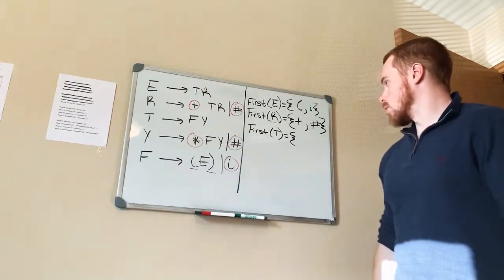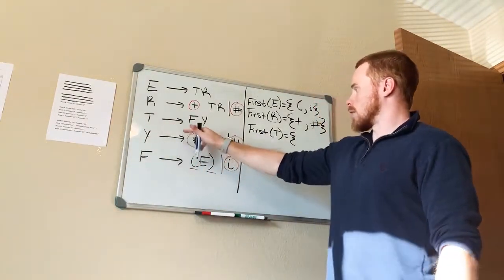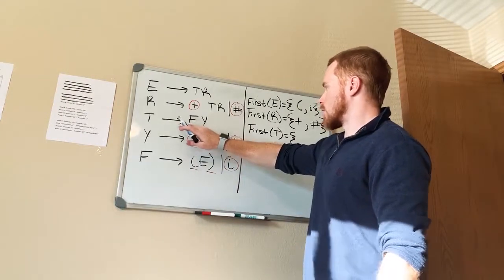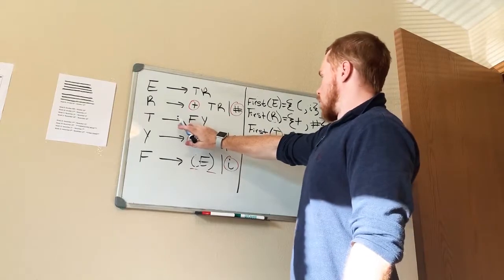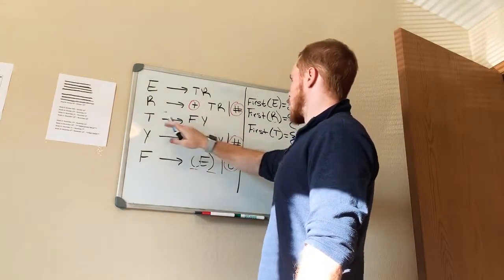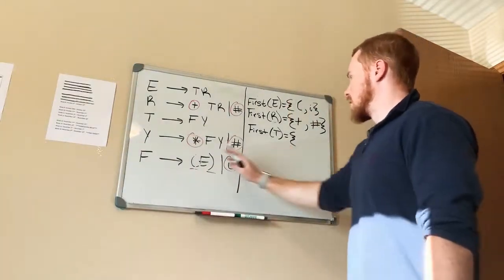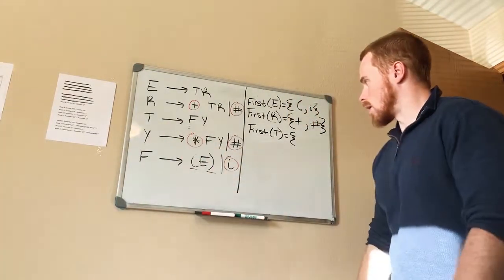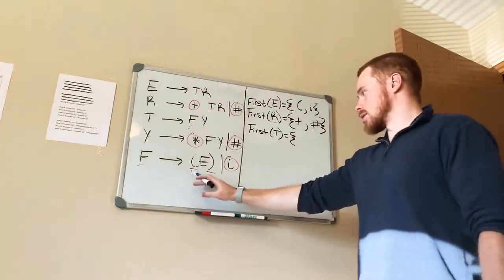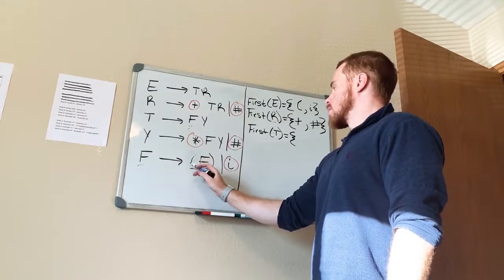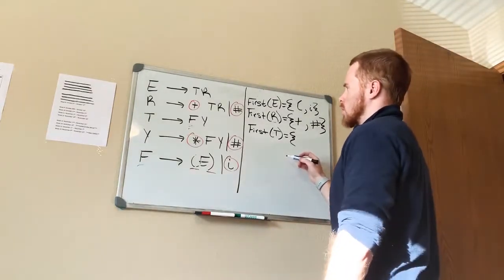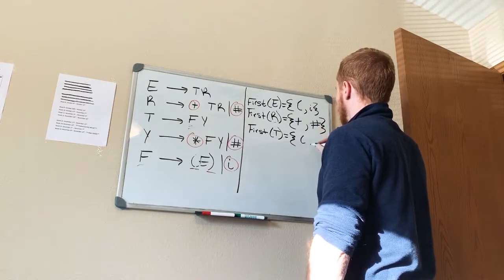Now let's do First(T). Following the rule for T, there's no terminal symbol to grab right away, so we have to calculate First(F). Going to the rule for F, the first terminal symbol we're going to hit is open parenthesis, and the other option via the 'or' is lowercase i. So First(T) is open parenthesis and i.